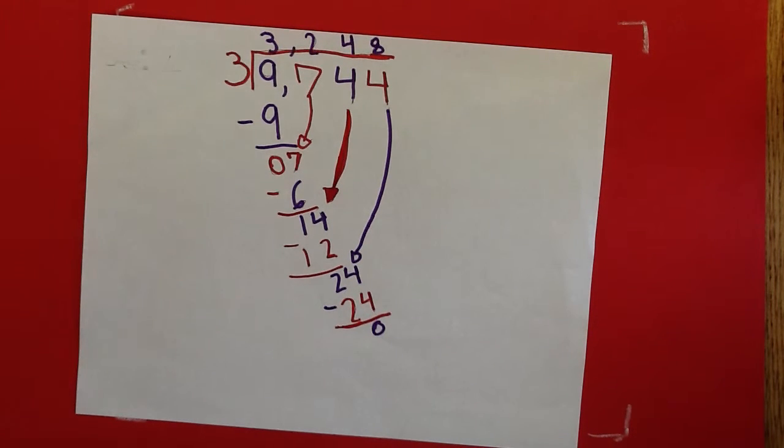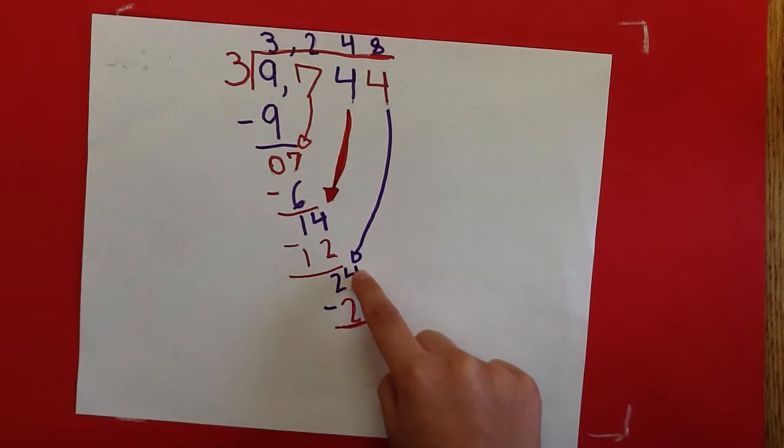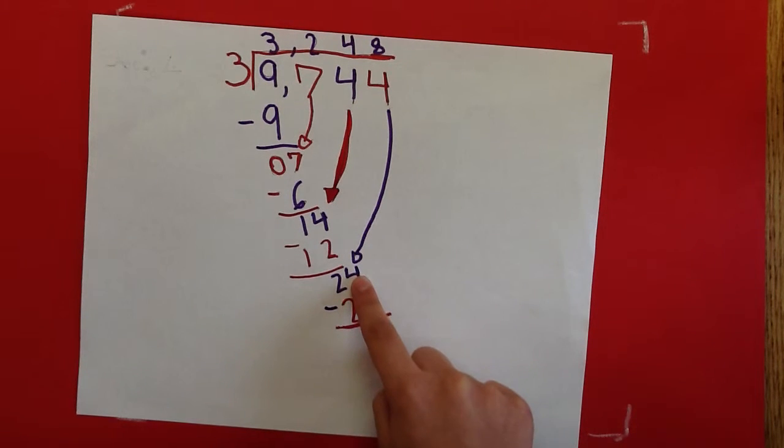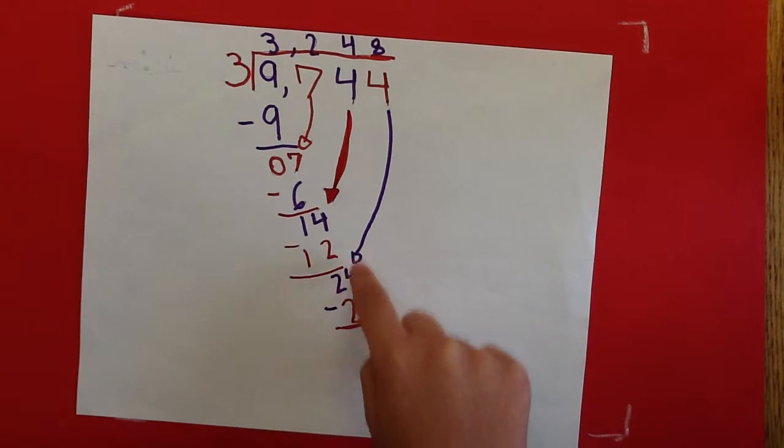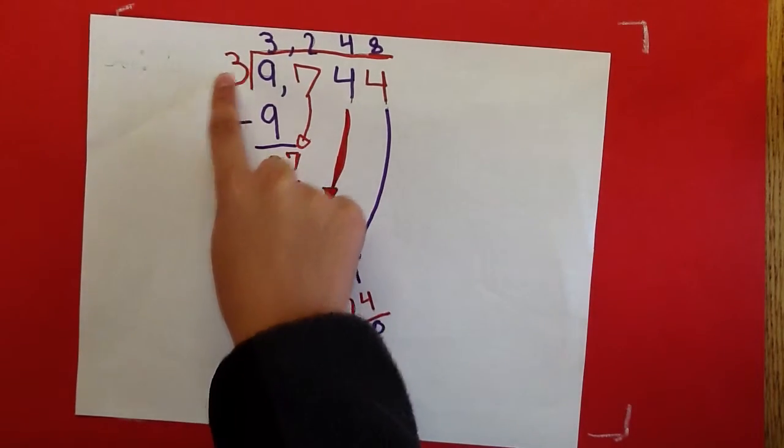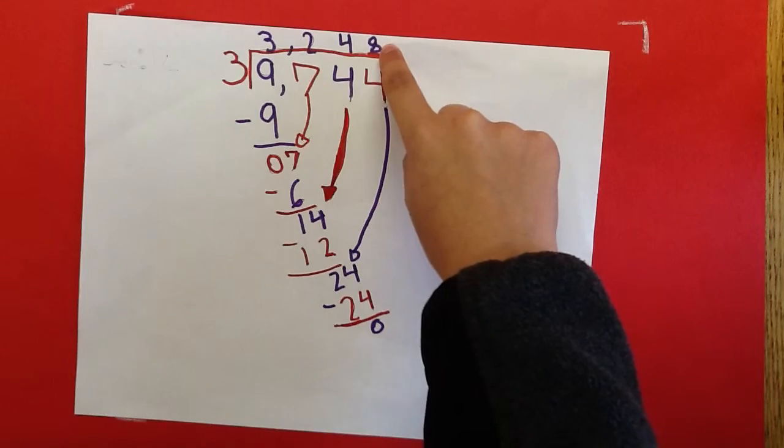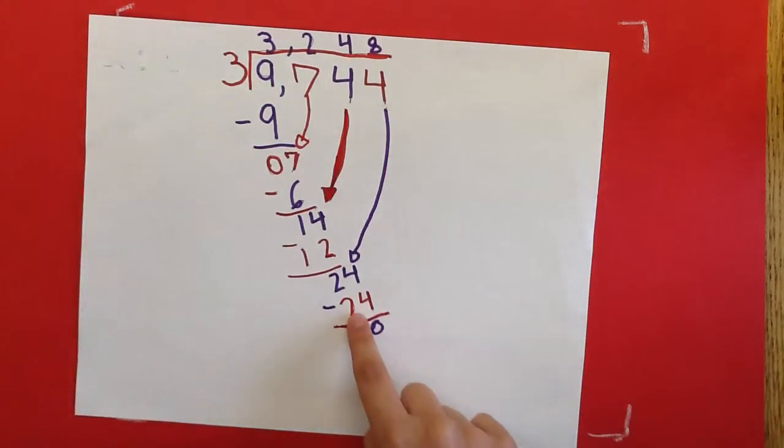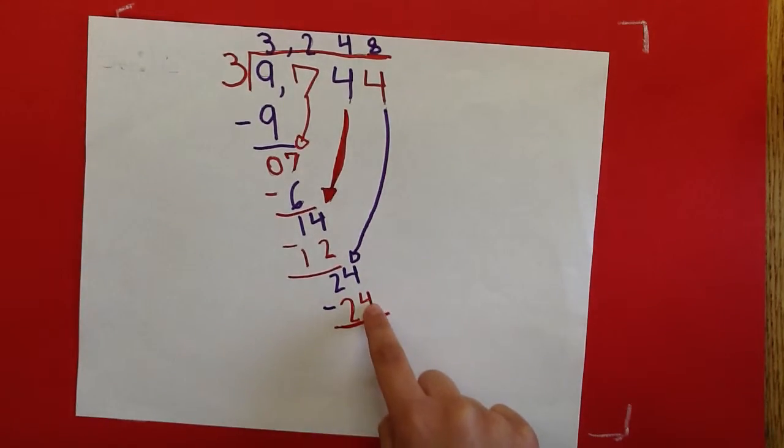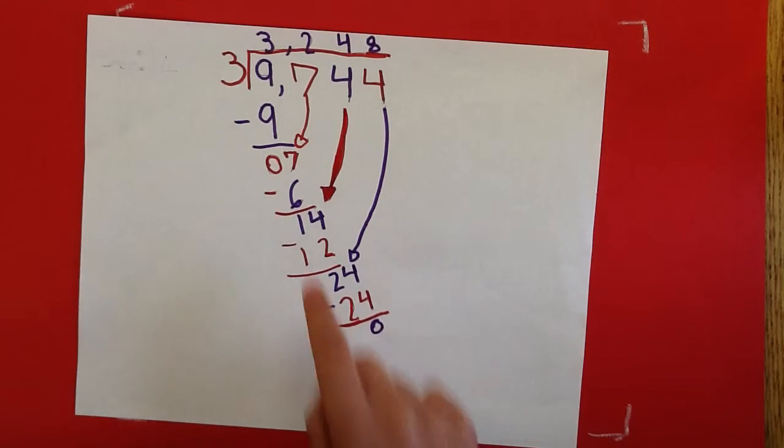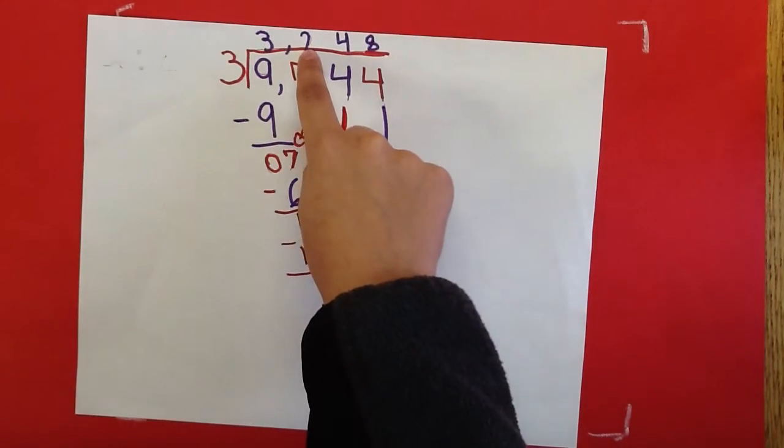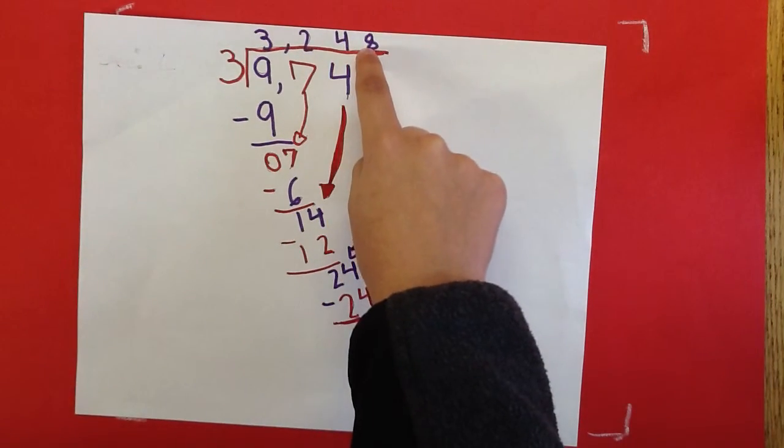Now that you've brought down the 4, you get 24. Then find out what number multiplied by 3 gives you 24. The answer is 8. Then you multiply 3 by 8 and you get 24. After that, you subtract 24 from 24 and you get 0. Your answer is 3,248 and you have no remainder.